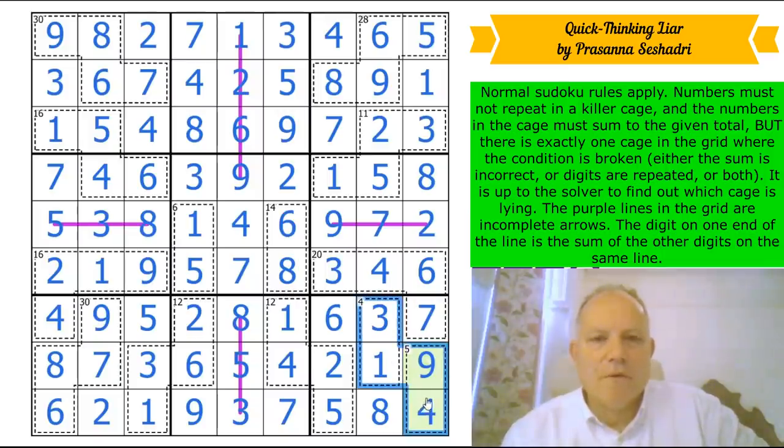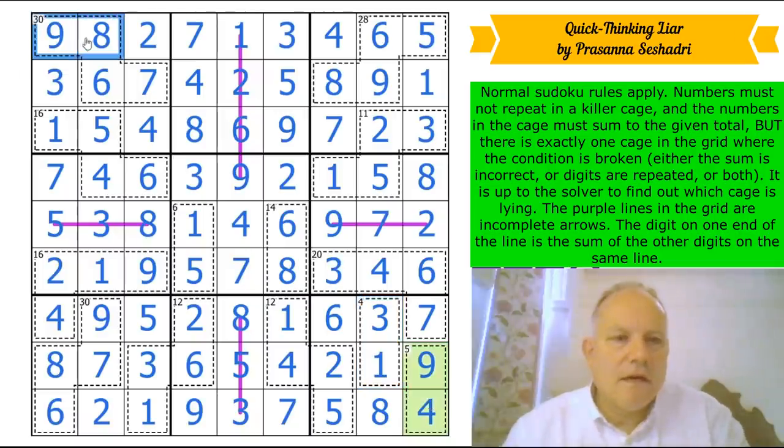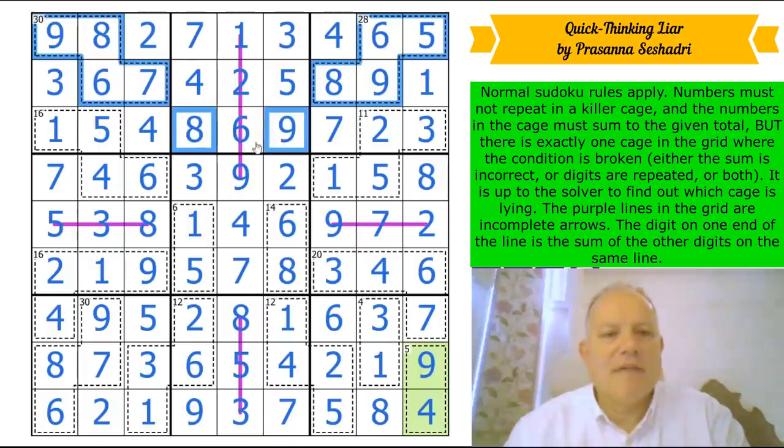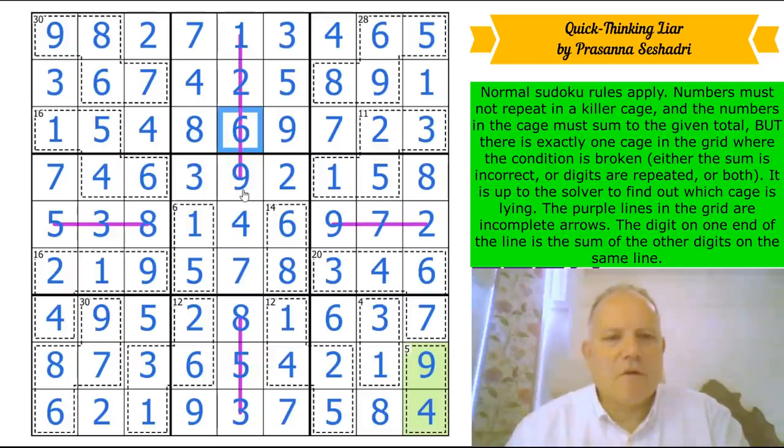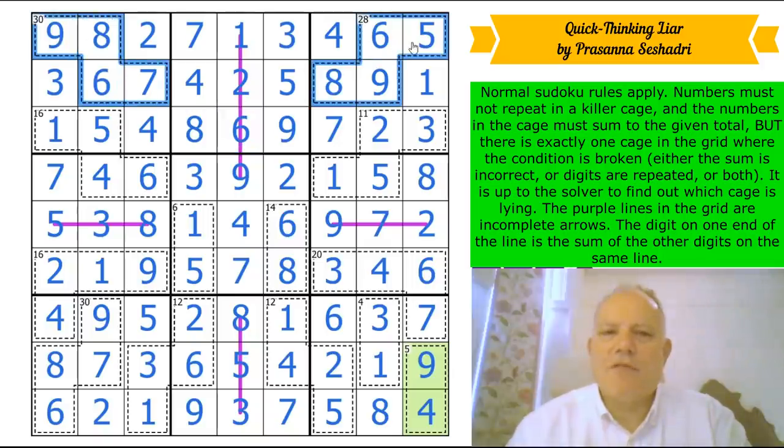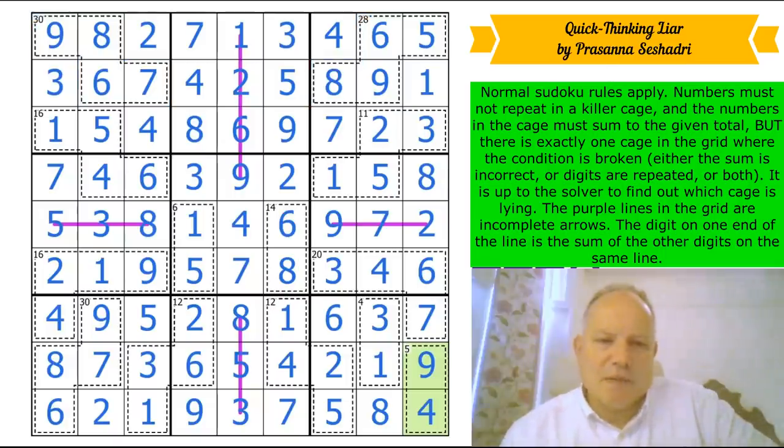Thank you for recommending that. I didn't expect to solve it in about 10 or 11 minutes, but spotting the liar quickly was really helpful. I admit that was a pretty quick deduction about the nine-eight pair there. If you took longer than me, it was probably just familiarity with what makes up a 28 cage. I know there's always a nine-eight in a four-cell 28 cage, then either seven and four or six and five. It's just a matter of experience sometimes.